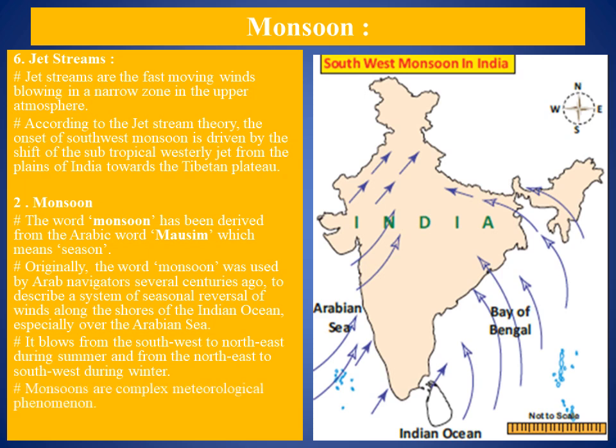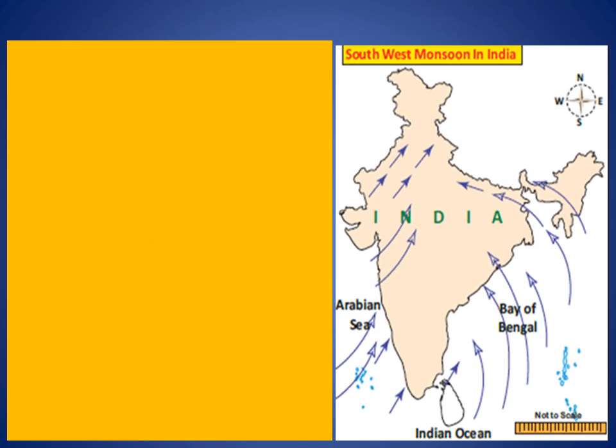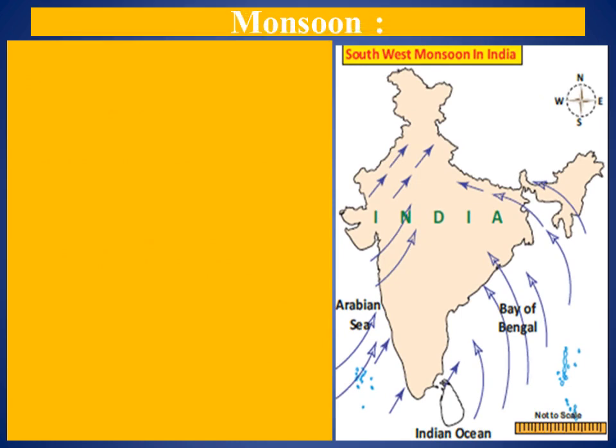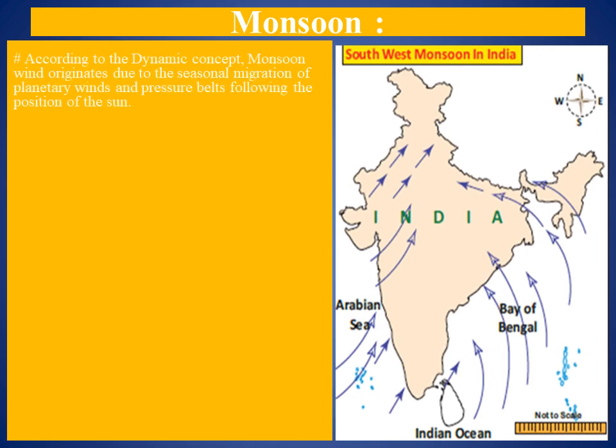Monsoons are complex meteorological phenomena. Meteorologists have developed a number of concepts about the origin of monsoon. According to the dynamic concept of monsoon, winds organize due to the seasonal migrations.